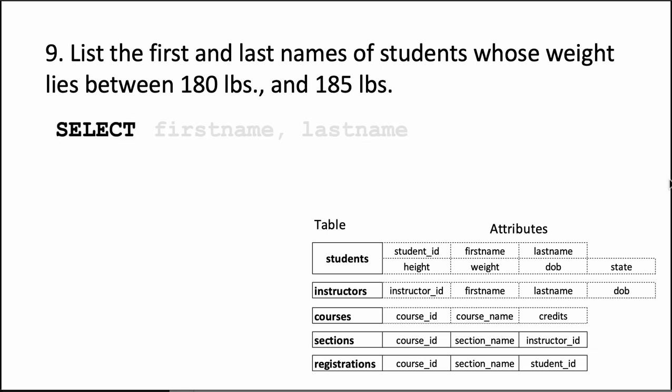We say SELECT firstname, lastname as before FROM students as before. This time we could have said WHERE the weight is greater than or equal to 180 pounds AND the weight is less than or equal to 185 pounds.